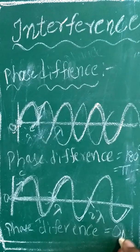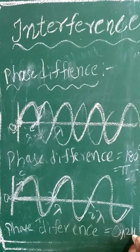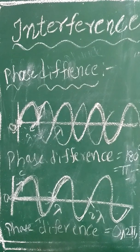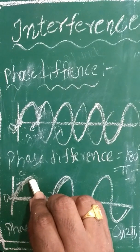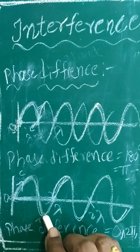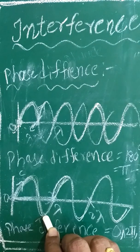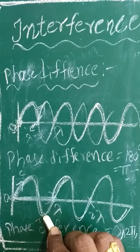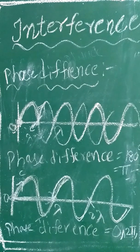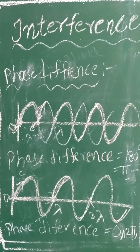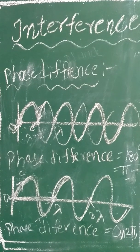If the phase difference is 0, 2π (360°), or 4π, the first wave's crest coincides with the second wave's crest, and the first wave's trough coincides with the second wave's trough. These are important points to remember to understand the principle of superposition. In our next class we will discuss the principle of superposition. Thank you — this is Gunna, please subscribe to my channel.